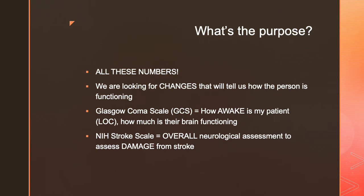Someone could have a low Glasgow Coma Scale or a poor stroke scale score, and that could still be consistent — that could be what we expect. Maybe they just got out of surgery, or maybe someone who had a stroke is expected to have deficits. So we're not necessarily as worried about the number itself as we are about major changes, because the changes in these scales are what tells us how the person is functioning. It helps to get that baseline to understand: are things getting better or worse? These scales help us trend that information.